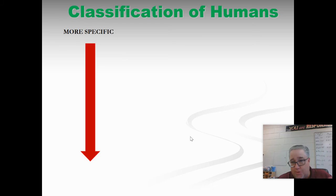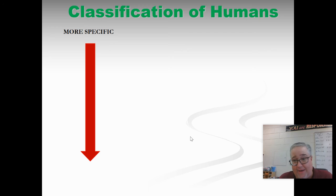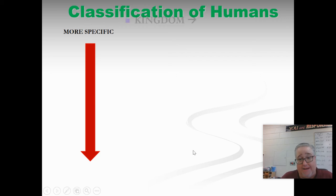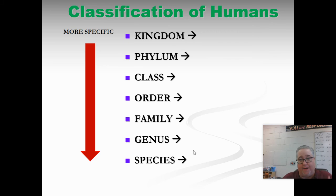It's like if you went to a grocery store — there's not just one category of food. There are multiple categories: the produce section, the dairy section, the frozen food section. All these different areas make it easy to identify and find things. Well, same thing with organizing living things. The more groups we have, the easier it is to place things. So today we're going to look at the seven different groupings of how we classify living things.